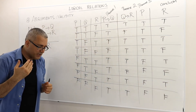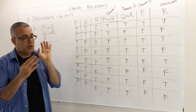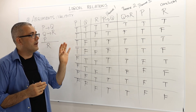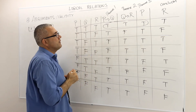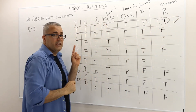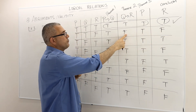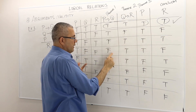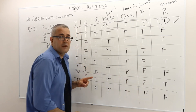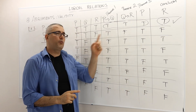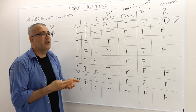Remember the definition of a valid argument: in all cases where all premises are true, the conclusion must also be true. Looking at the table, there is only one case where all premises are true simultaneously. In that case, the conclusion is also true. For all other rows, at least one premise is false, so we don't care about those. Hence, this is a valid argument.